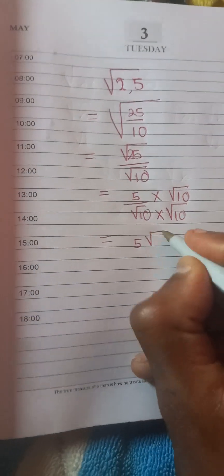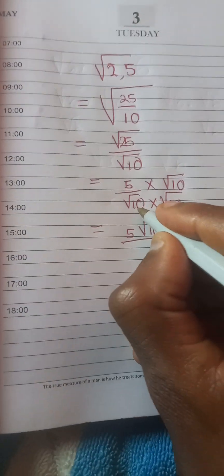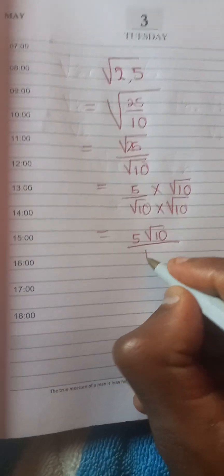So 5 times square root of 10, you get 5 square root of 10. Square root of 10 times square root of 10, you're going to get a 10.